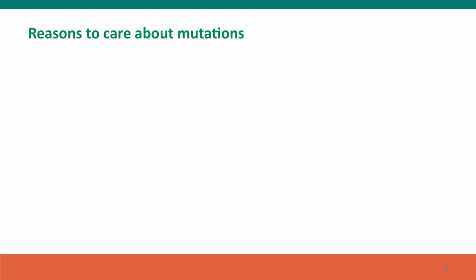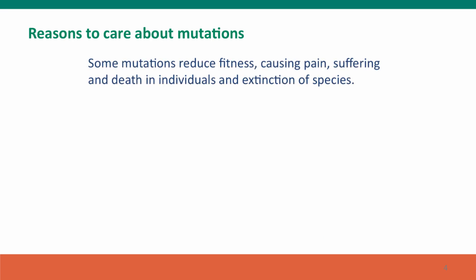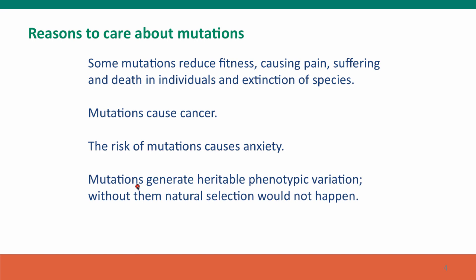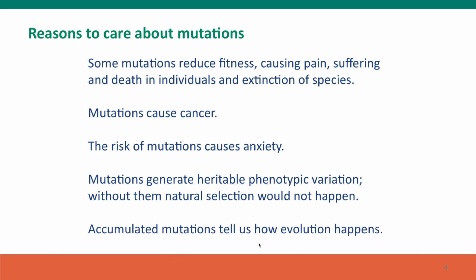There are lots of reasons to care about mutations. Mutations reduce fitness — they cause harm to individuals, cause extinction of species, and they cause cancer. We'll talk a lot about how mutations cause cancer in Module 4. On the other hand, in an evolutionary framework, mutations generate the heritable variation that's the raw material of evolution. If we didn't have mutations, there'd be no natural selection, and evolution wouldn't have happened. Finally, accumulated mutations tell us how evolution happens — they provide a kind of historical record.